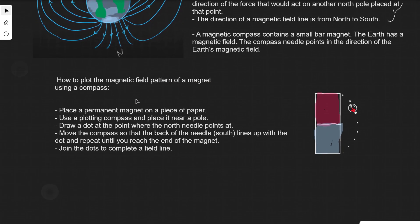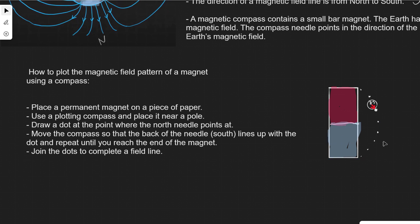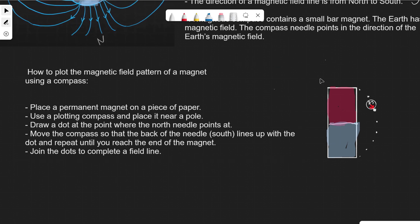There is a required practical: plotting the magnetic field pattern of a magnet using a compass. Place a permanent magnet on a piece of paper, then use a plotting compass placed near the pole. Draw a dot at the point where the north needle points, then move the compass to that point, aligning the dot with the back of the needle. Repeat drawing dots until you reach the end of the magnet, then join all the dots to form a complete field line.